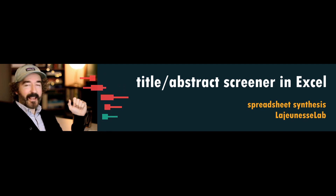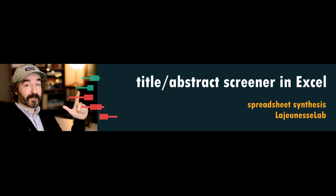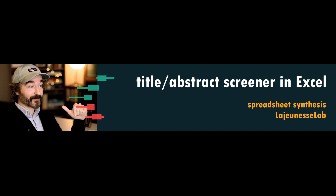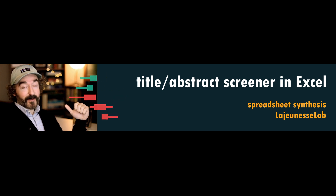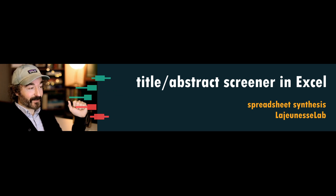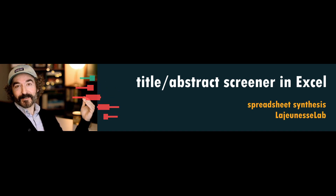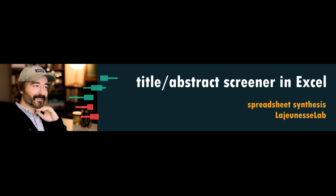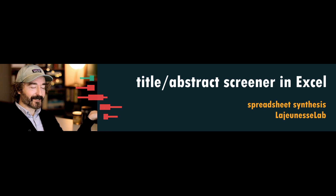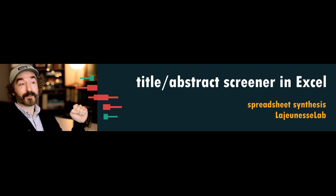Today we are going to modify Excel so that we could screen the abstracts and titles of many studies. If you're doing a systematic review and a meta-analysis, one of the first tasks you have to complete is making decisions on which studies to include and exclude for your project. This is time-consuming and tedious, but we could make use of Excel to do this task.